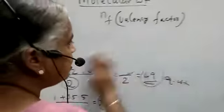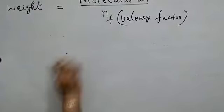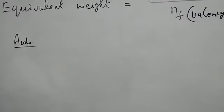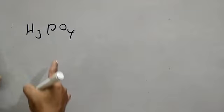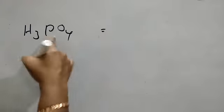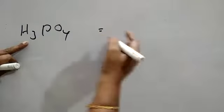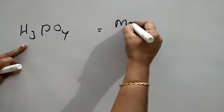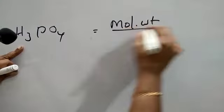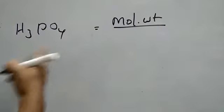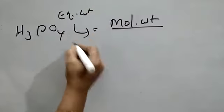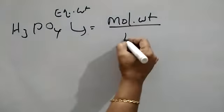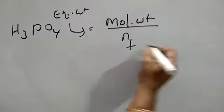Let us see some more different examples regarding acids — very beautiful examples. First example: orthophosphoric acid H3PO4. For this, the equivalent weight equals molecular mass divided by N-factor.